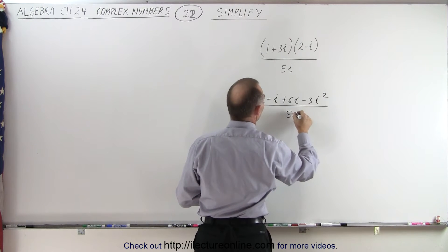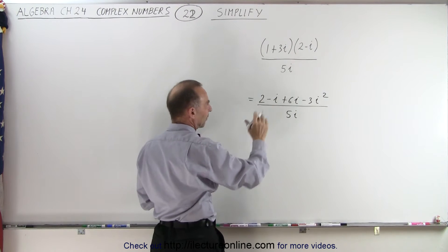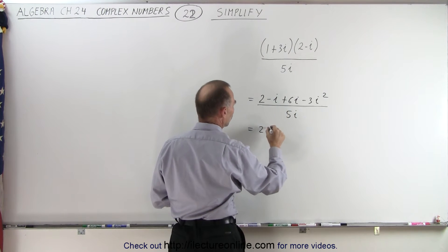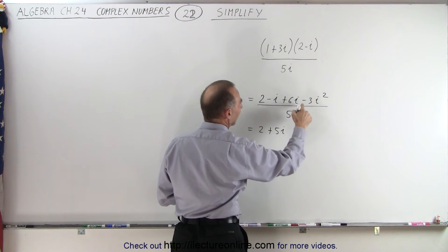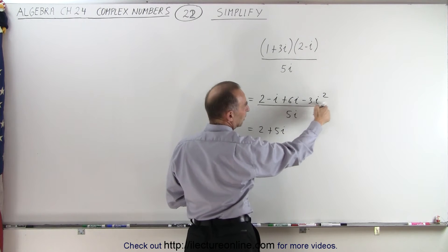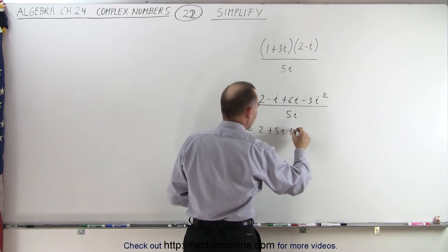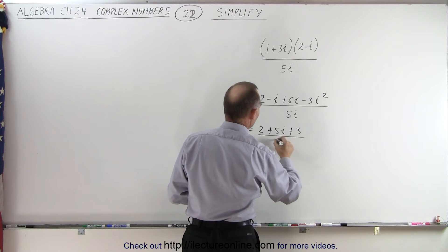All divided by 5i. Now we're going to simplify the numerator some more. We can collect these two terms, so we get 2 plus 5i and negative 3i squared. Remember that i squared is equal to negative 1, so that becomes a positive 3.